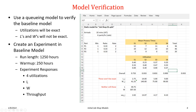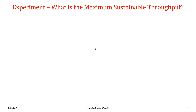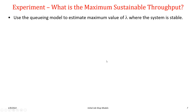To summarize the experiment: run length 1,250 hours, warm-up 250 hours, 32 replications, with experimental responses set up. For experimentation, we ask: what is the maximum sustainable throughput our system can have? We have a given arrival rate, and if the system is stable, throughput and arrival rate will be the same. Our baseline is 6 per hour, but we want to know the maximum sustainable rate.